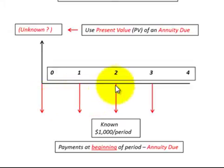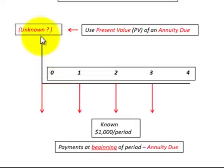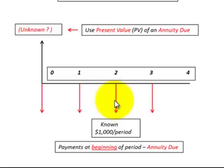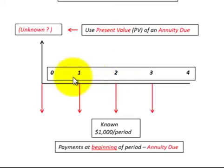Now we have four equal payments, but they're at the beginning of the period — that's the key. We want to discount those and know what their present value is at the beginning, which is the unknown amount. In this case, we'd use the present value of an annuity due. They'll either refer to it as annuity due or say that payments are at the beginning of the period, so you need to adjust your calculator or use the proper table accordingly.